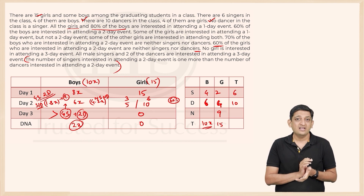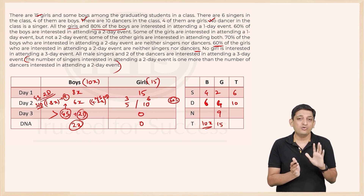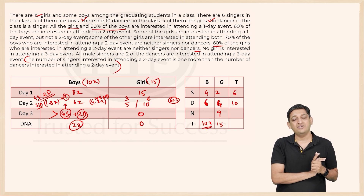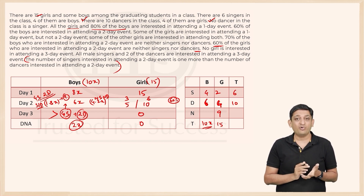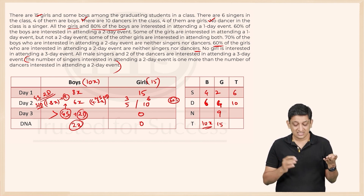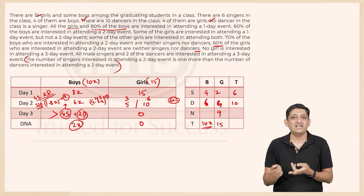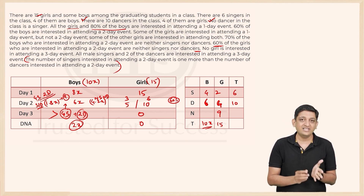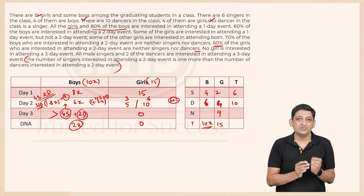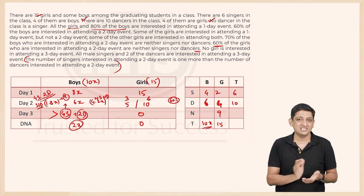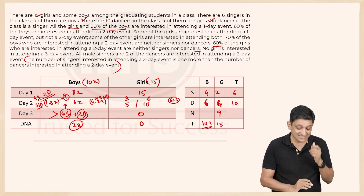But the total number of boys who can sing or dance is at most 10 — there are only 4 boy singers and 6 boy dancers. So 18 is impossible. Therefore x must equal 5, and this is actually one of the direct answers to the questions in this set. That is the beauty of the set.